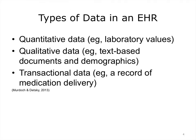The data layer of the DIKW hierarchy contains many types of data: laboratory results, x-rays, blood pressure data, physician's notes, and so on. Data in an EHR or other health information system, such as a laboratory information system or radiology information system, can generally fall into one of three categories. Quantitative data includes numbers, such as a laboratory glucose result of 130, a patient date of birth, or a blood pressure of 130 over 70. Qualitative data includes narrative text, such as physician's notes, as well as demographic data such as race, ethnicity, and religion. A third type is transactional data, such as date and time stamps of when medications were delivered.